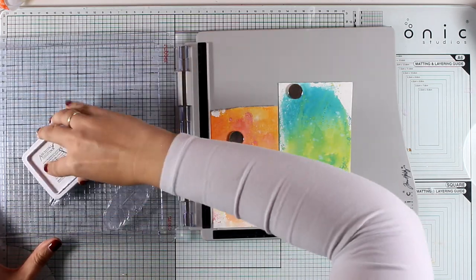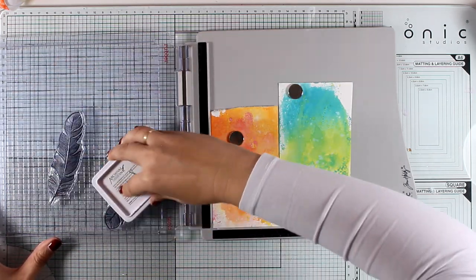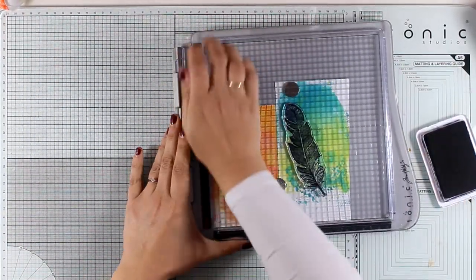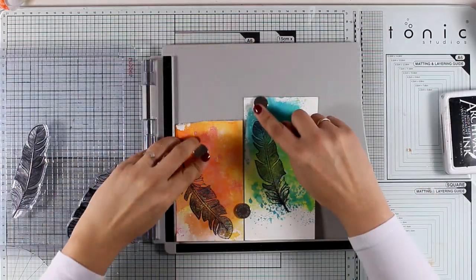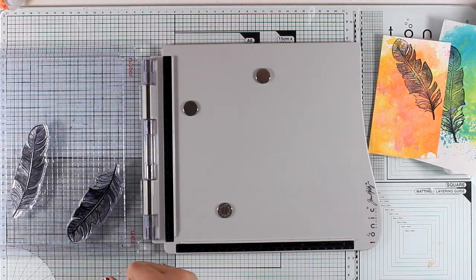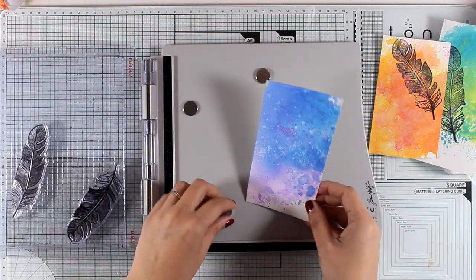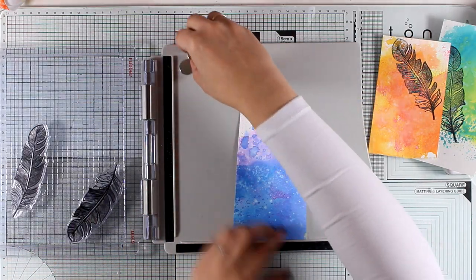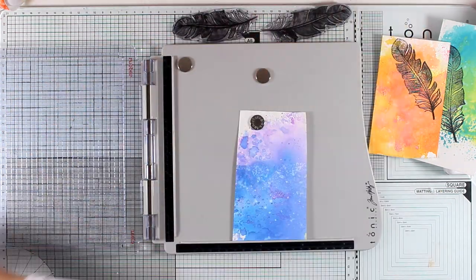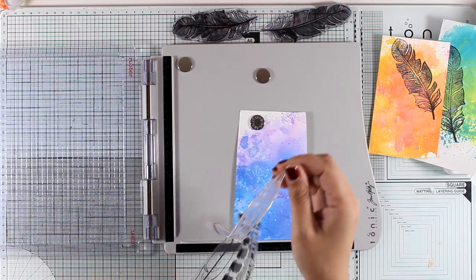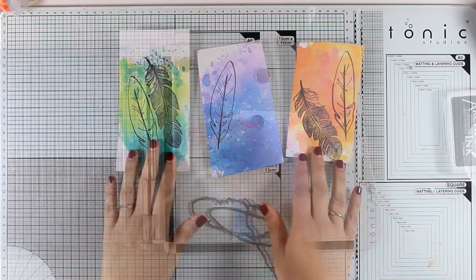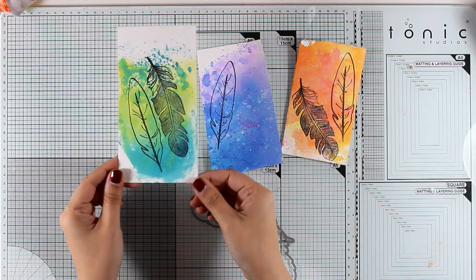Now I'm going to stamp my feathers on these pattern papers and I will be using archival ink for that, just to make sure that everything is going to be permanent. Since I don't know exactly which feathers I want to use for my page, I'm stamping way more than I need. There are many different designs, three designs actually of feathers. At this stage I didn't actually know which of those I want to use, so I'm going to make sure that I have enough.